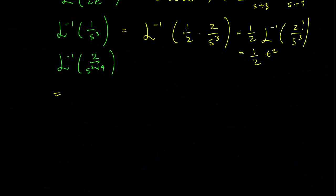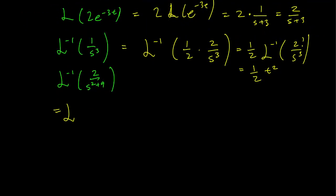We have 3 over s² plus 9 in this column. We need to get a 3 in the numerator here. This is going to be 2/3 times 3 over s² plus 9. So now we have the three in the numerator.